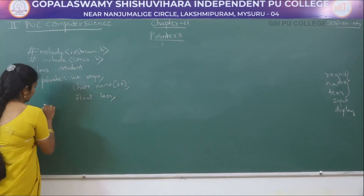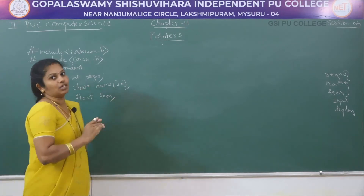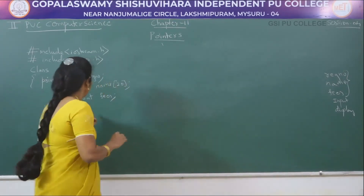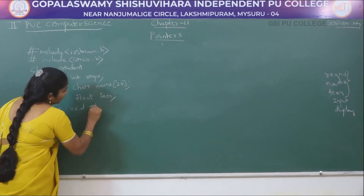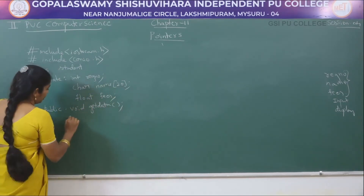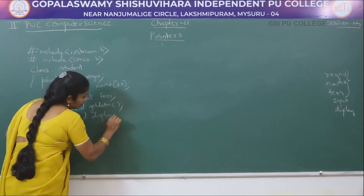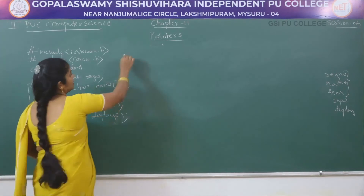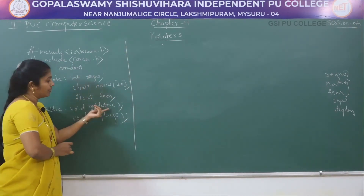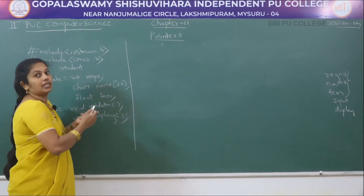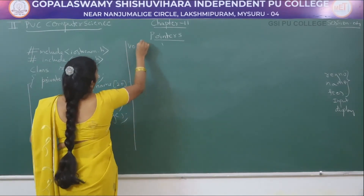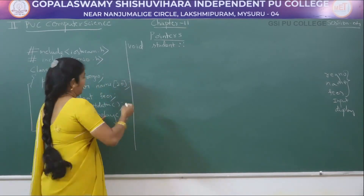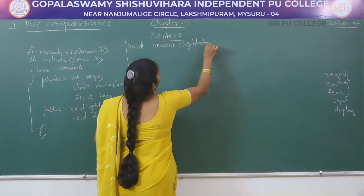In the public section, declare the functions. We need two functions: one for input purpose — void getdata() — and one for display purpose — void display(). Then close the class with a semicolon. Next we write the definition of the getdata function outside the class. The return type is void, the class name is student, then scope resolution operator, then the function name getdata.